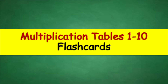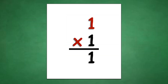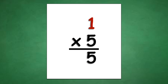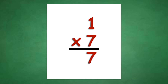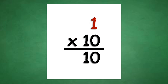Abacada Multiplication Tables 1 to 10 Flashcards. Table 1: 1 x 1 equals 1, 1 x 2 equals 2, 1 x 3 equals 3, 1 x 4 equals 4, 1 x 5 equals 5, 1 x 6 equals 6, 1 x 7 equals 7, 1 x 8 equals 8, 1 x 9 equals 9, 1 x 10 equals 10.